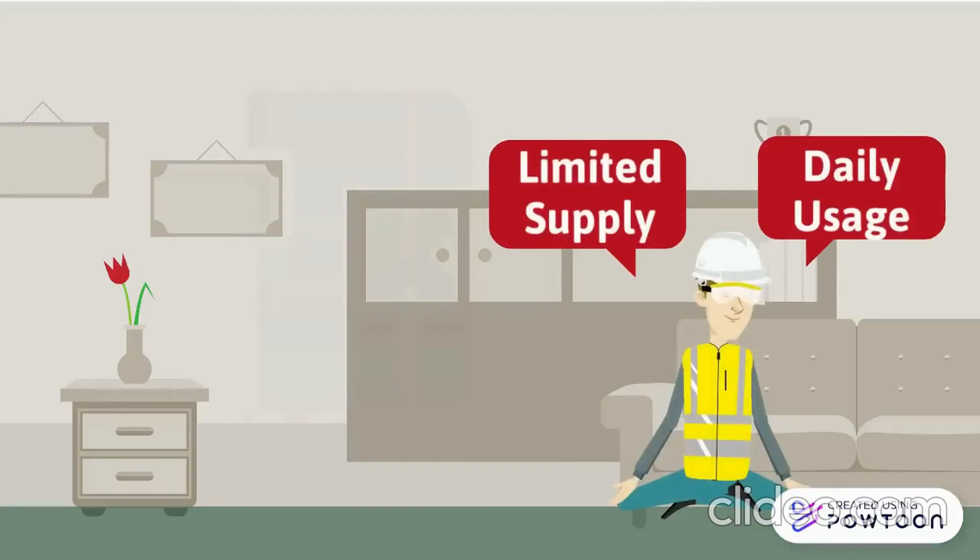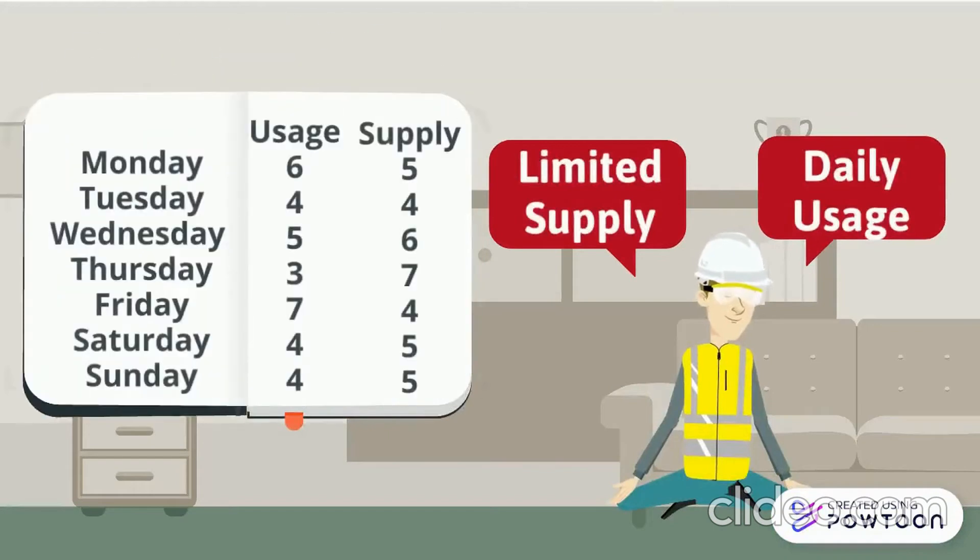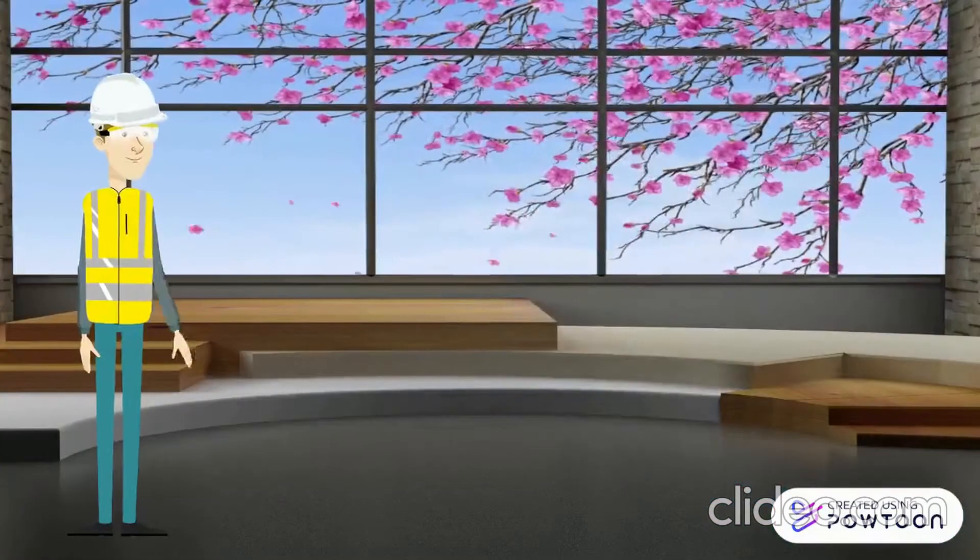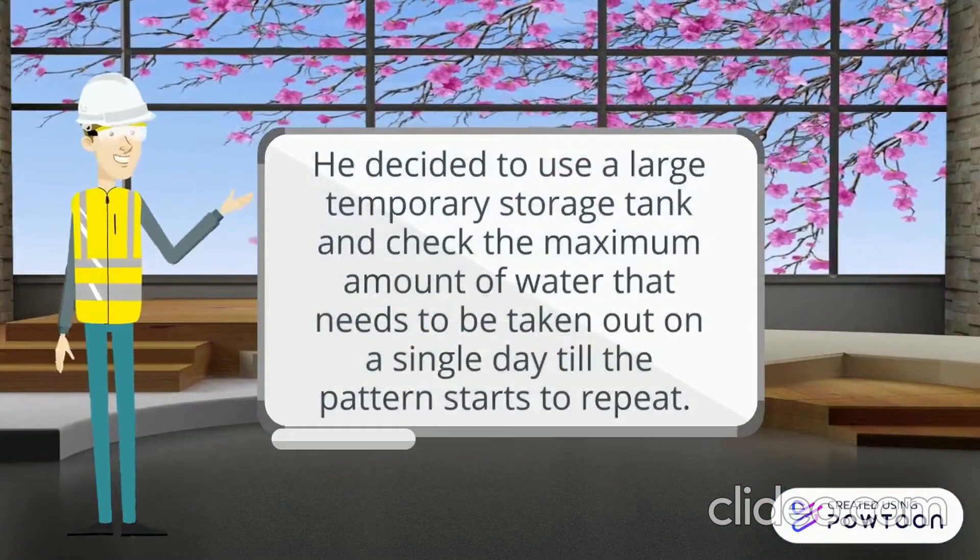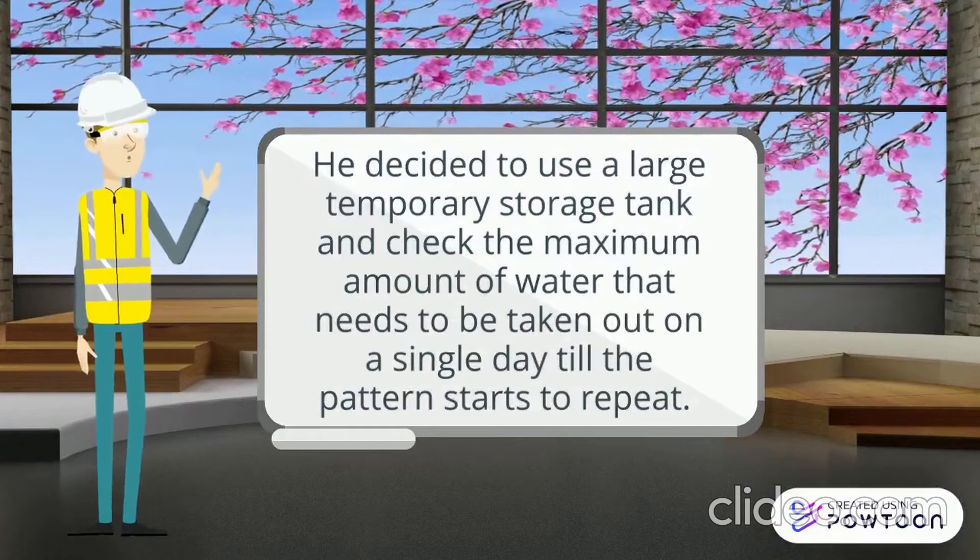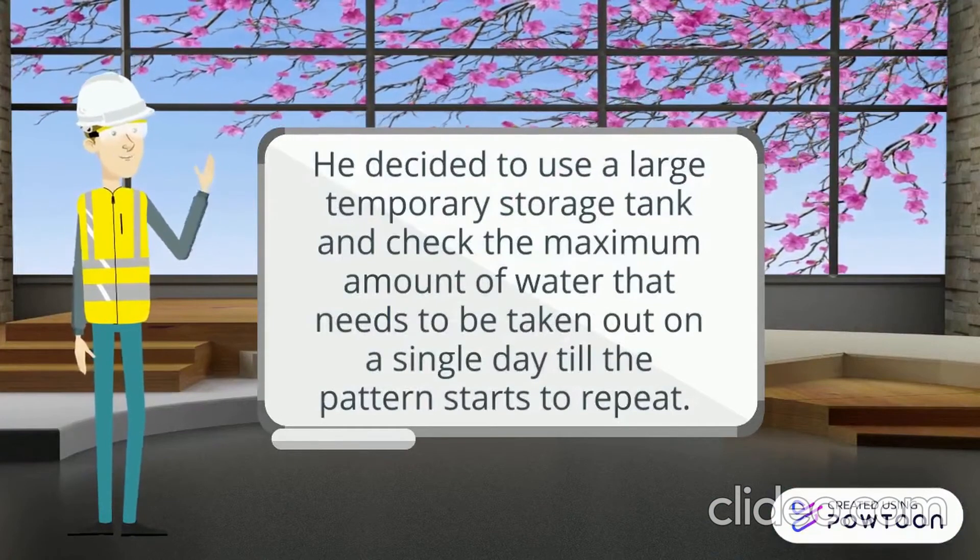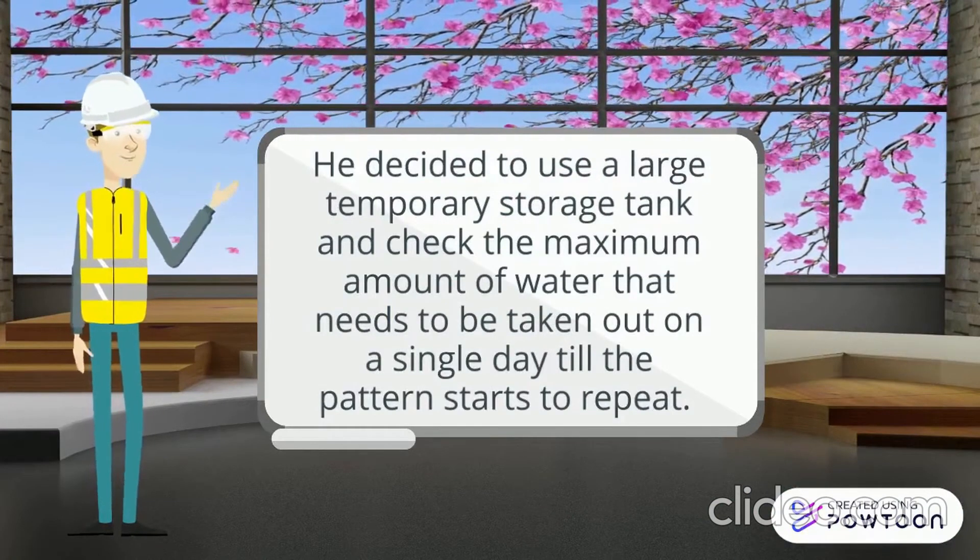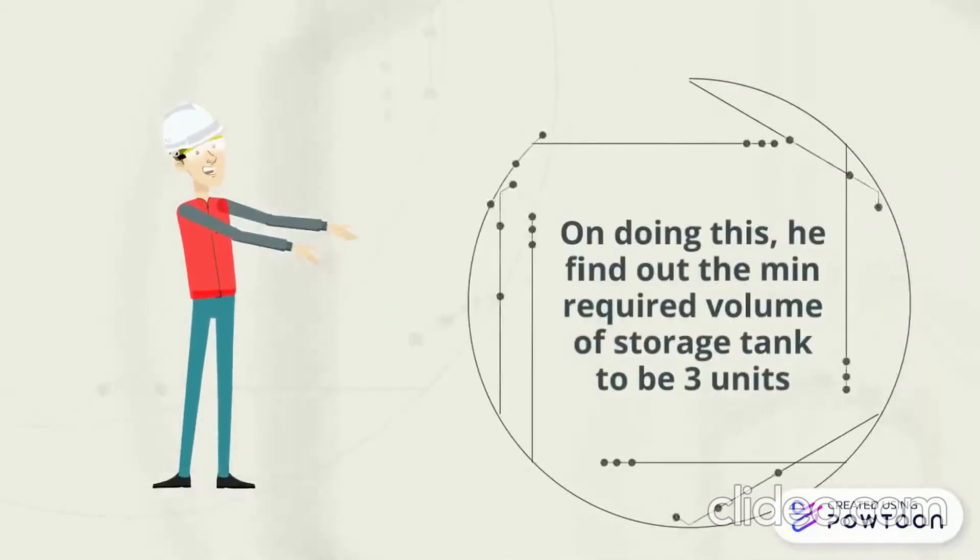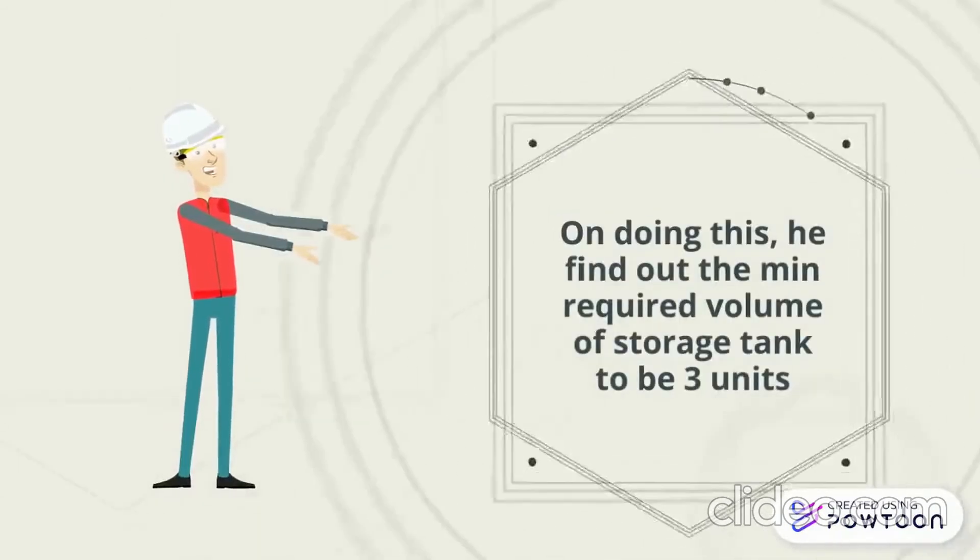Meet John, he wants to design the storage tank for his house. He listed the supply of water and the daily usage over a period of a week. On doing this, he found out the minimum volume of the storage tank to be 3 units.